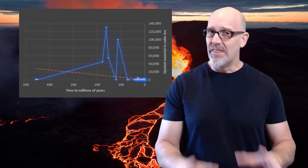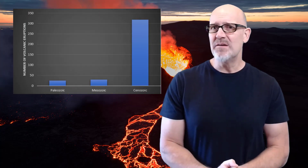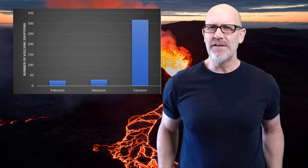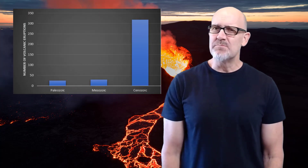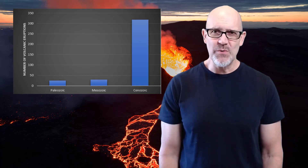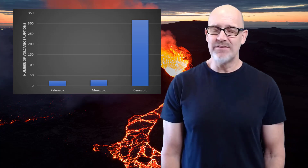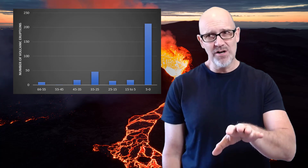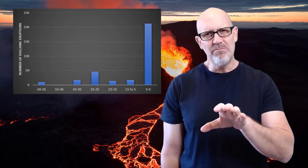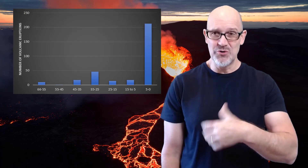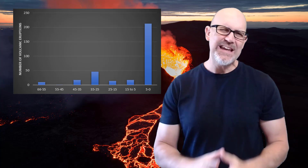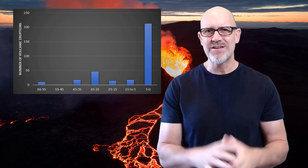But wait, there's more. Not only do volcanic eruptions get smaller over time, it also turns out that they become more frequent — much more frequent. In this bar graph, you can clearly see that volcanic frequency is much more prevalent in the Cenozoic. Breaking the Cenozoic down into 10 million year blocks shows that there have been more volcanic eruptions in the last supposedly 5 million years than at any other time in Earth history combined.